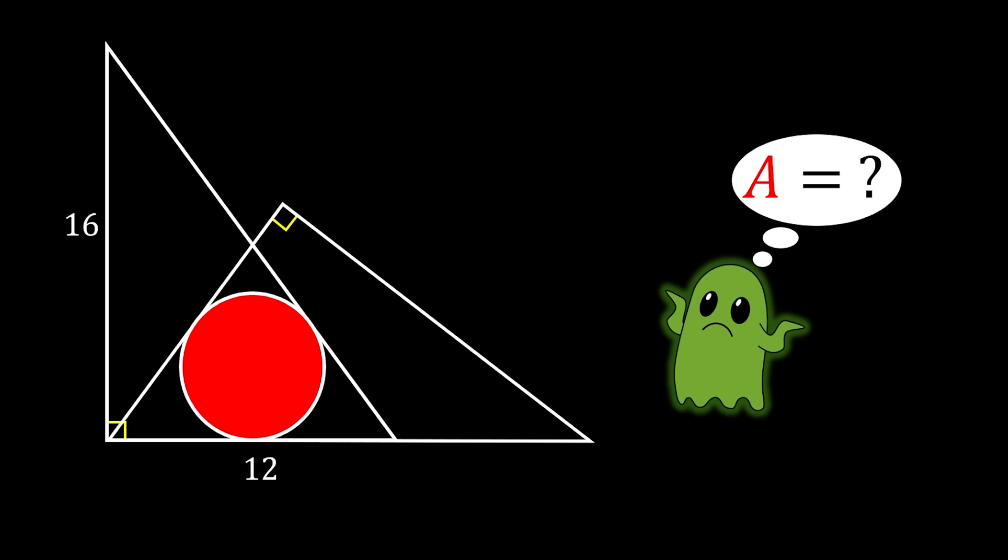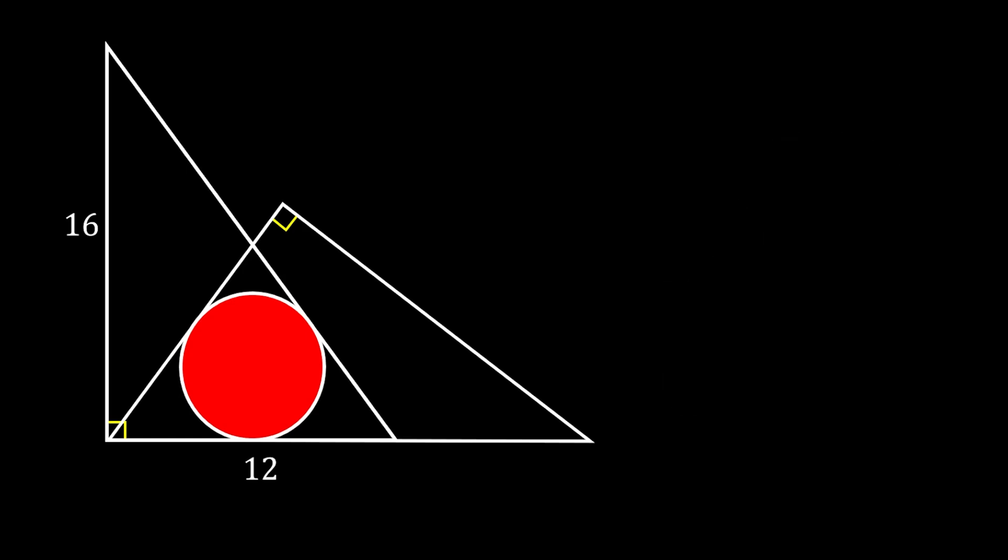Alright, so let's get to the solution. First thing that we're going to do is to label the vertices of our right triangle as A, B and C.